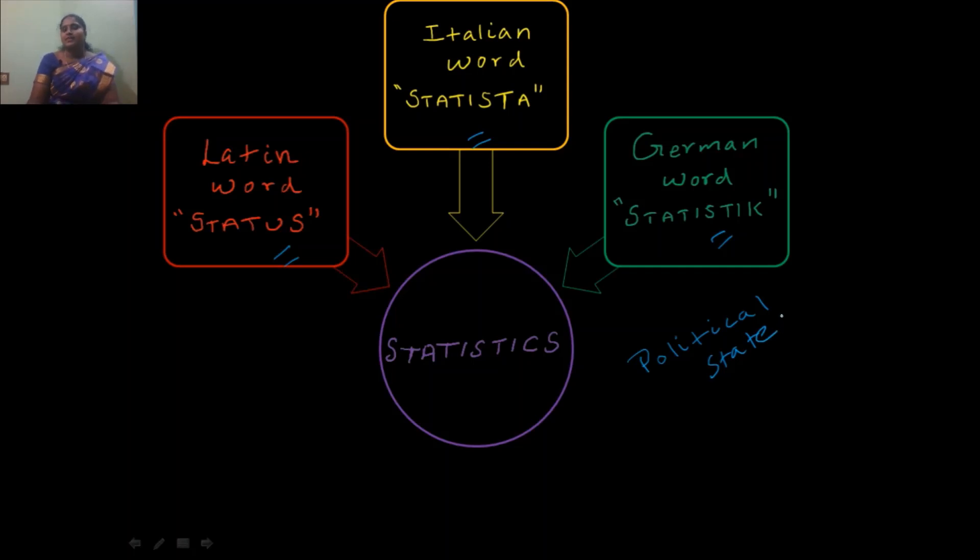Because in ancient times, the government has used statistics as a tool to collect only the information regarding the population and property of the country. Only for these two reasons alone, the kings of ancient times has used statistics.